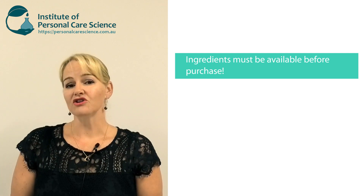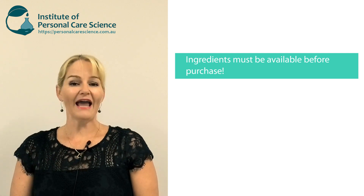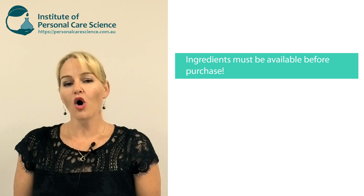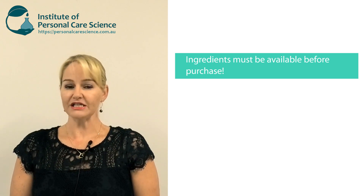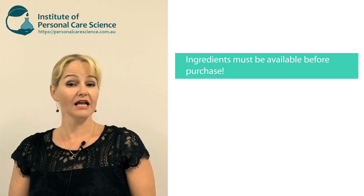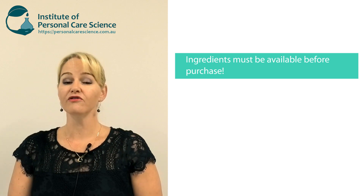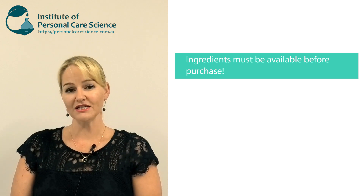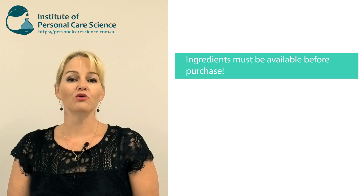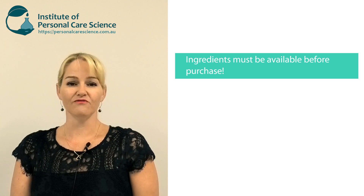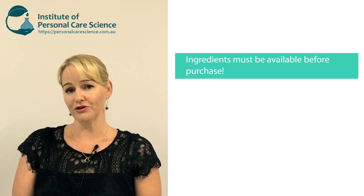This means the ingredient list must be on the outer packaging or on display at the point of purchase. Now if you are selling products online this means you must have a full and correct ingredient list on your website so that people can access this information before they make a purchase.